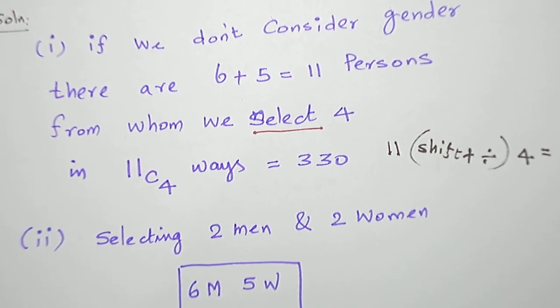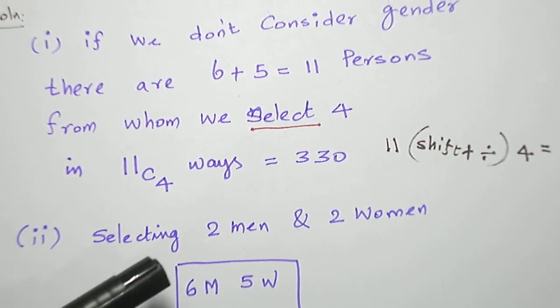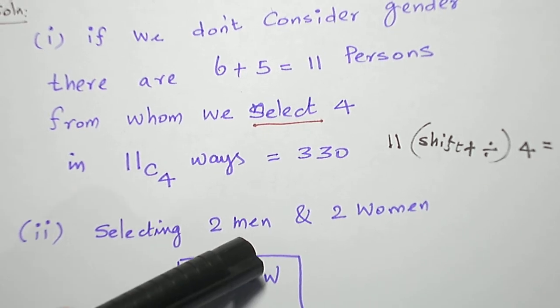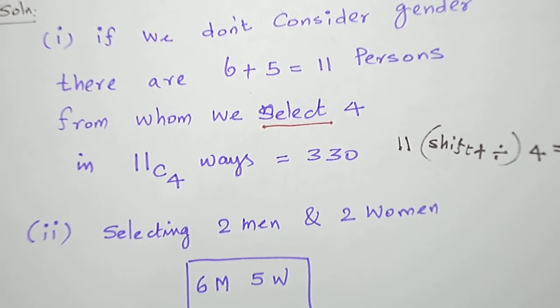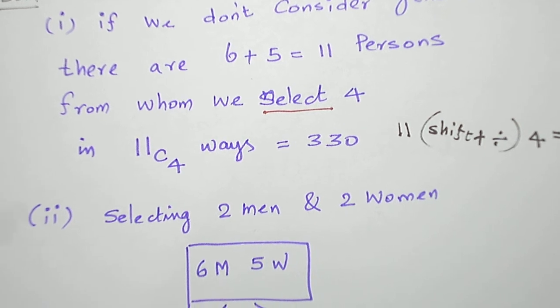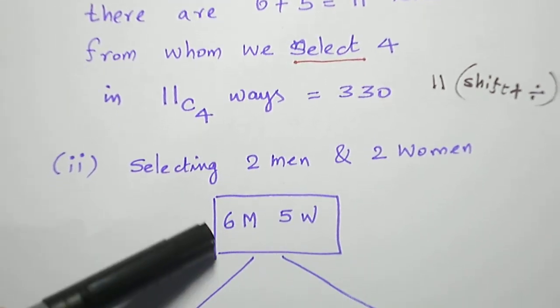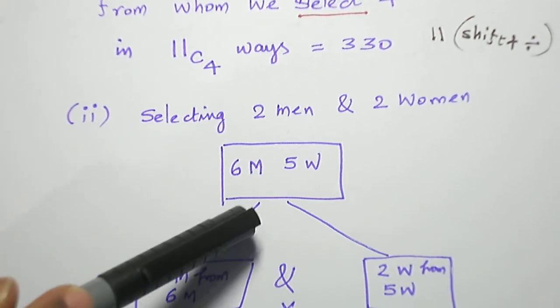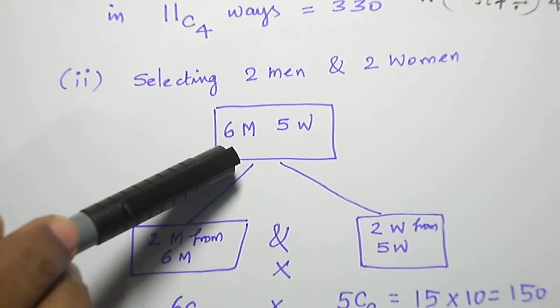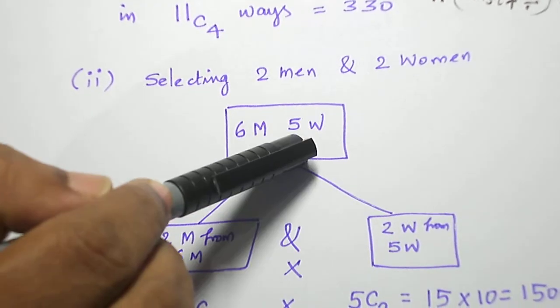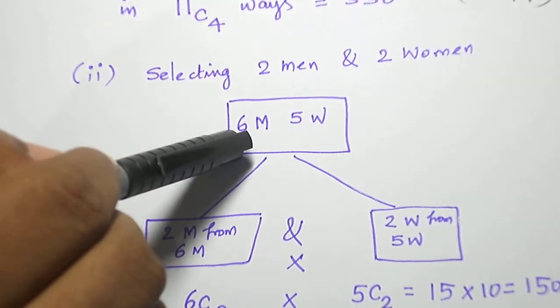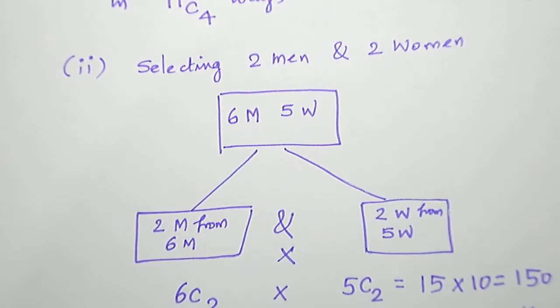Now the second part of the question is selecting two men and the remaining two are women. My task is to select four persons from six men and five women. Two must be men and two must be women.